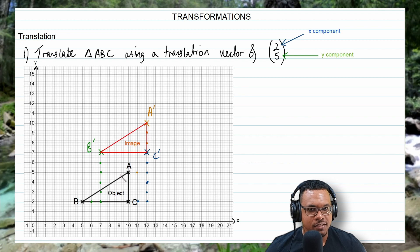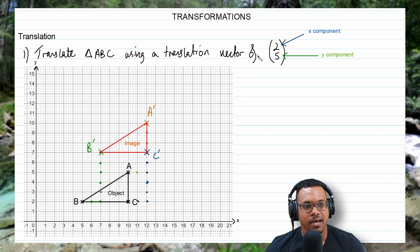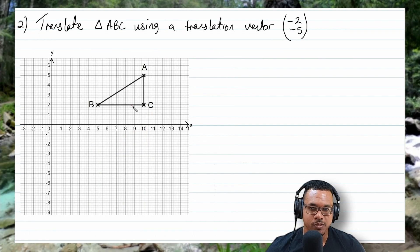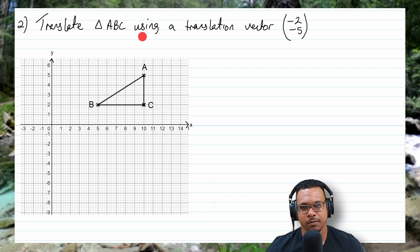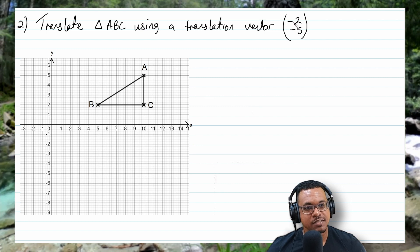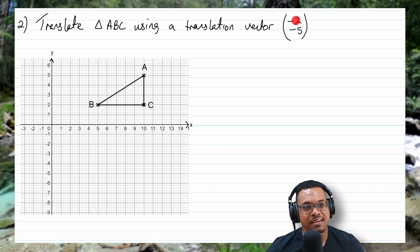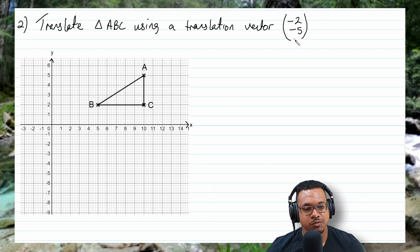For question two, I'll take the same triangle ABC as the object and use a translation vector of negative 2 and negative 5. The x-component is negative 2, so this time we are going to the left two units, and the y-component is negative 5, which means we are going down five units.